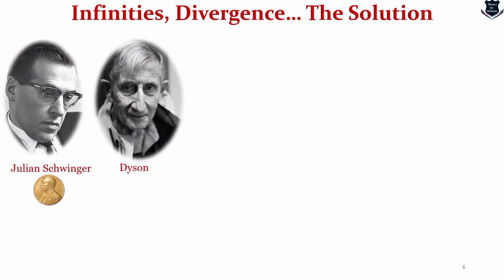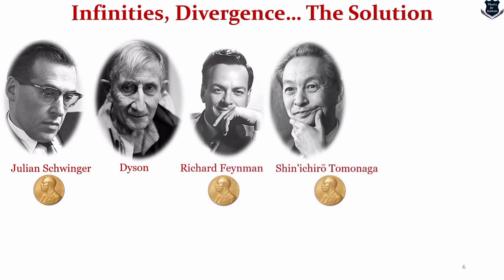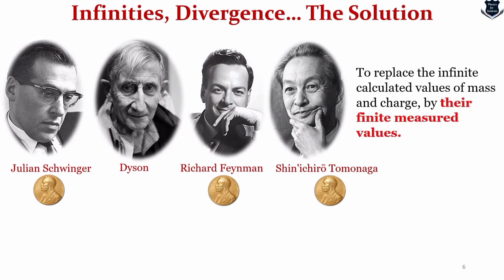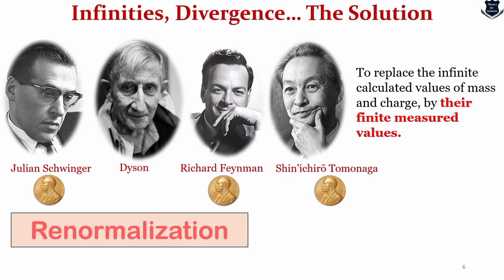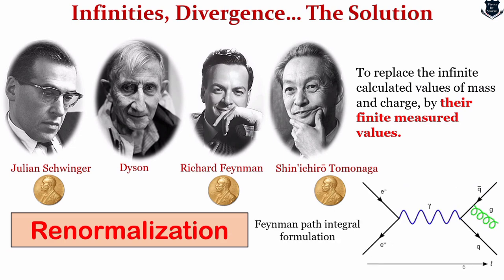Now we have earlier found that in order to go ahead with quantum field theory, what arises are infinities, divergences and many other problems. So Julian Schwinger, Freeman Dyson, Richard Feynman, Sinshiro Tomonaga, all of them are Nobel laureates except Dyson. They found a solution which could replace the infinity calculated values by their finite measured values.